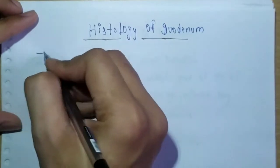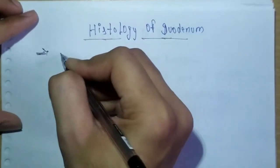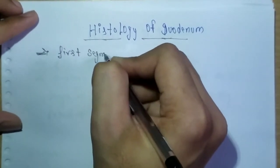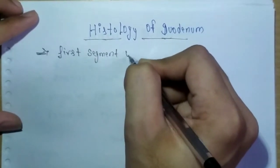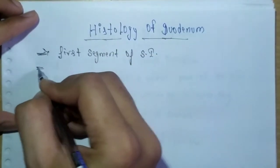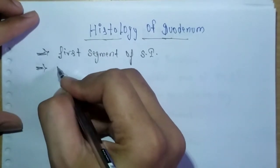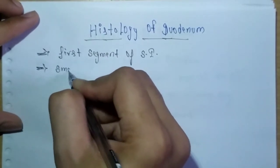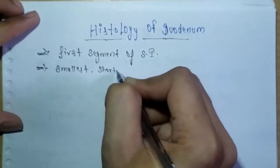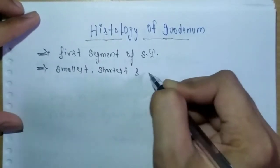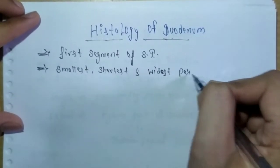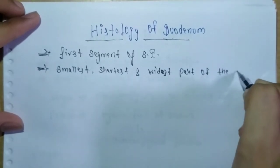Duodenum के बारे में बात करें तो duodenum अपने small intestine का first segment होता है। यह small intestine का shortest and widest part होता है।